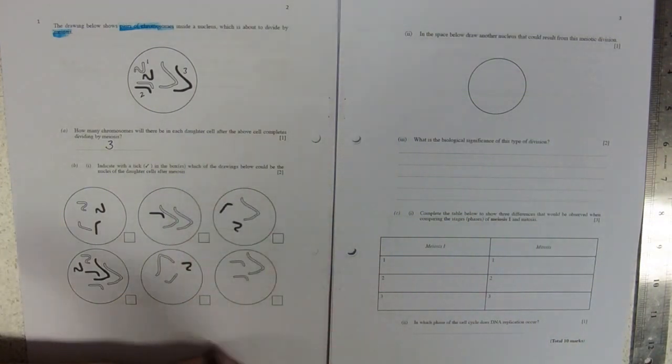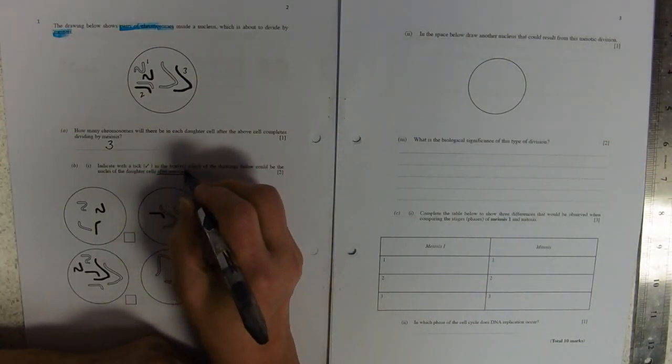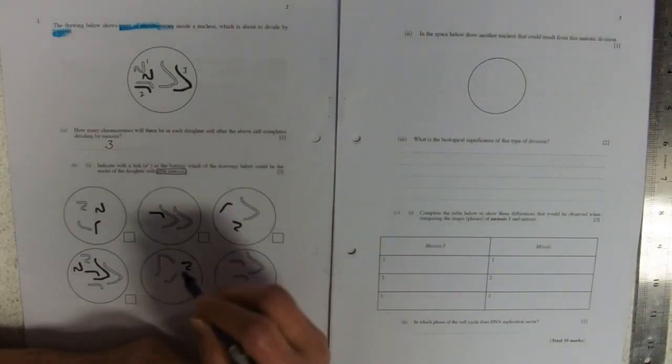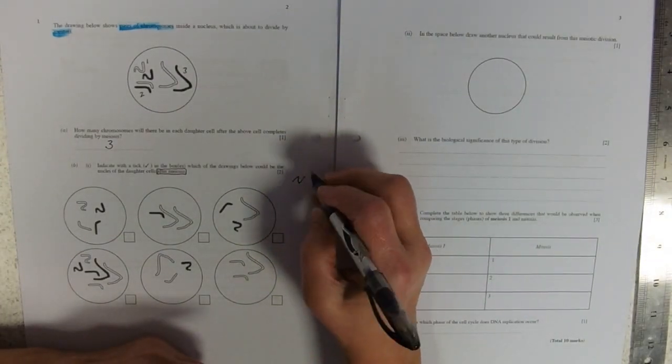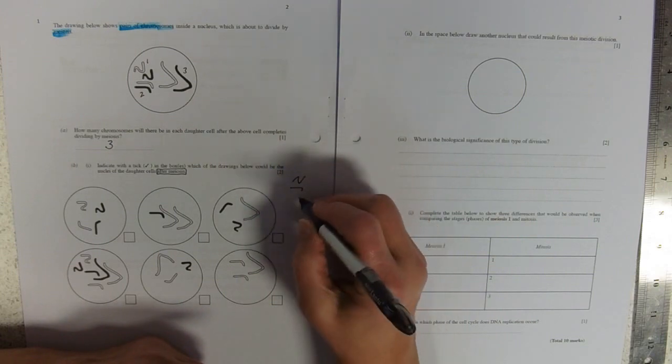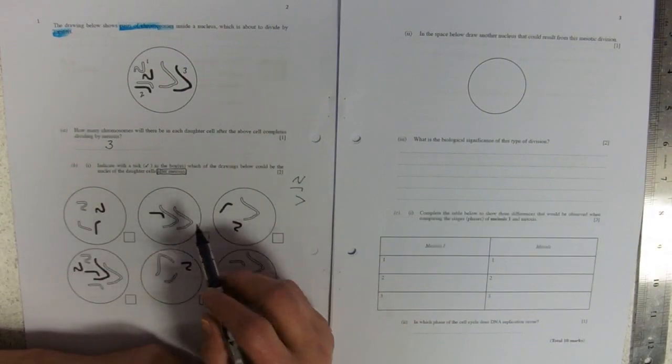Indicate with a tick which of the drawings could be the nuclei of the daughter cell after meiosis. So I want a cell that has got a zigzag in it, a walking stick, and a V-shaped one.